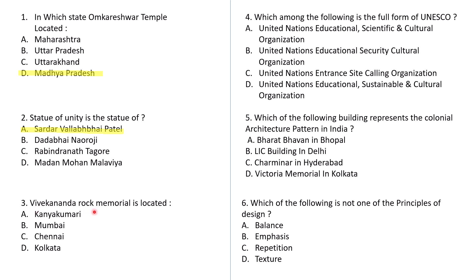Question number 3: Vivekananda Rock Memorial is located in? The answer is A — Kanyakumari. Question number 4: Which among the following is the full form of UNESCO? Option A: United Nations Educational Scientific and Cultural Organization. B: United Nations Educational Security Cultural Organization. C: United Nations Entrance Site Calling Organization. D: United Nations Educational Sustainable and Cultural Organization.